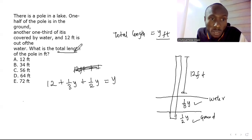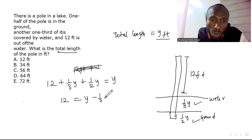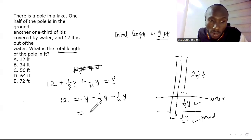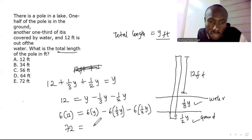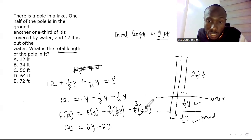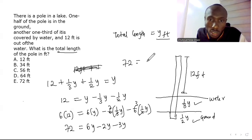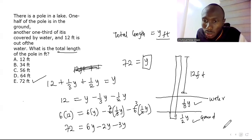Collecting like terms: 12 = y − (1/3)y − (1/2)y. Multiply both sides by 6 to clear fractions: 72 = 6y − 2y − 3y = y. So the total length of the pole is 72 feet. The answer is E.